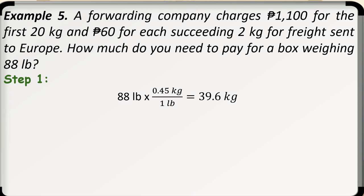So, we have 88 pounds times 0.45 kilogram over 1 pound. Canceling the units for pounds, we have 88 times 0.45 kilogram is equal to 39.6 kilograms.